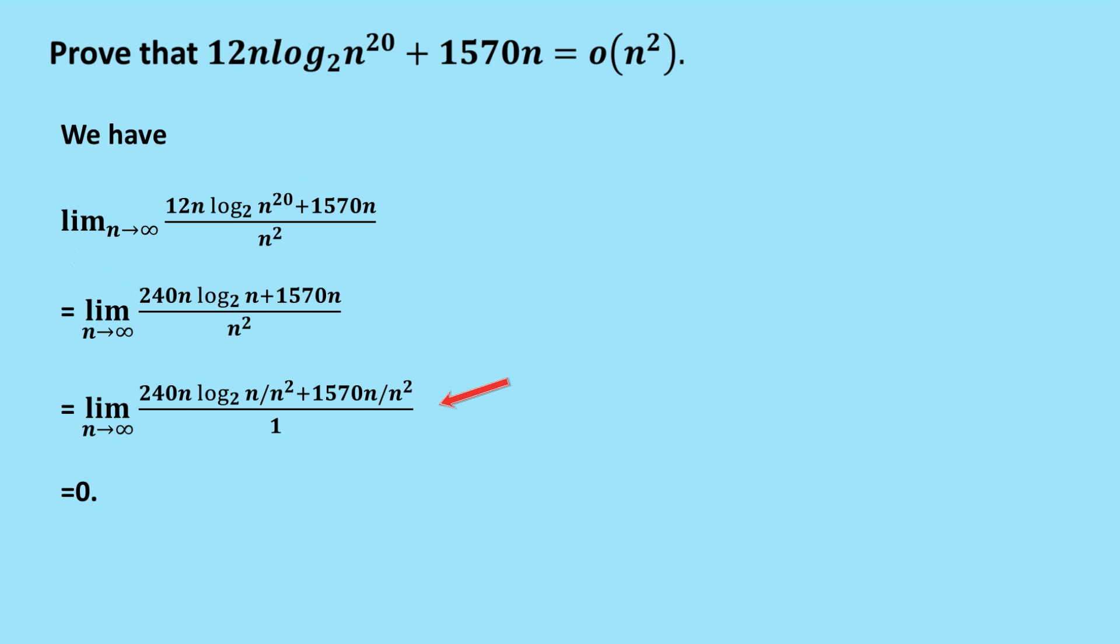Once you know that, it's pretty obvious that the limit goes to 0 as I've shown here. If you don't know that n log n divided by n^2 approaches 0, then you probably need to have a look at a video on limits and get that under control.